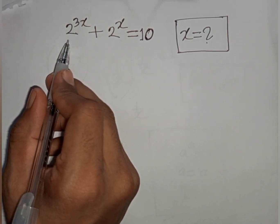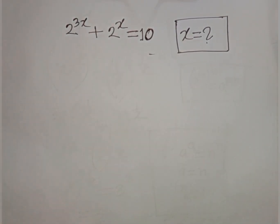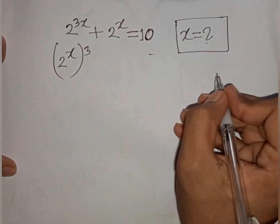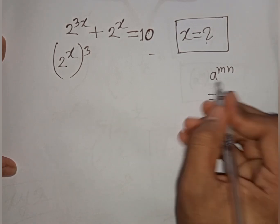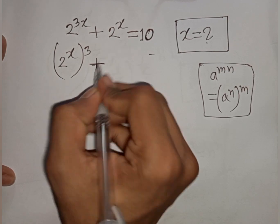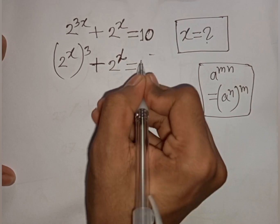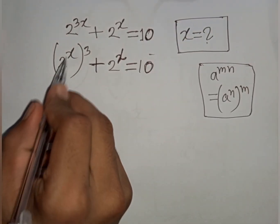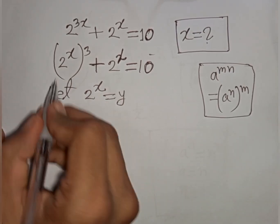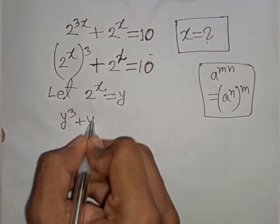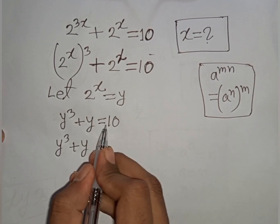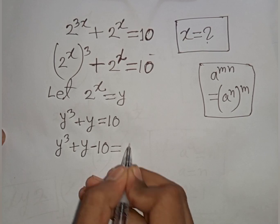Now we solve: 2^(3x) + 2^x = 10. Note that 2^(3x) = (2^x)³. So the equation becomes (2^x)³ + 2^x = 10. Let y = 2^x, so our equation is y³ + y = 10. Moving 10 to the left gives y³ + y − 10 = 0.